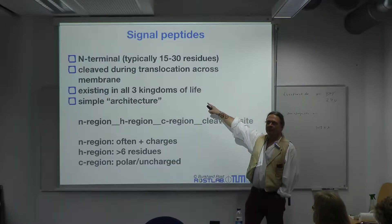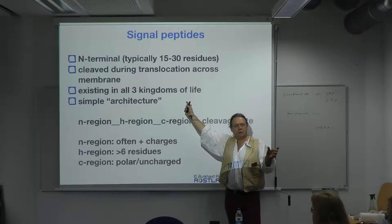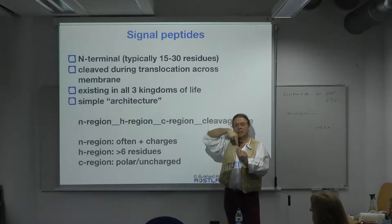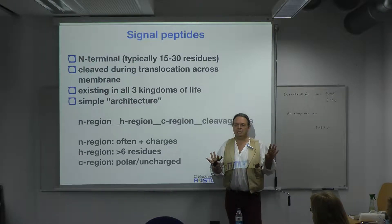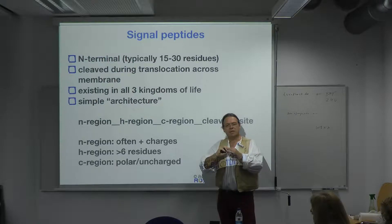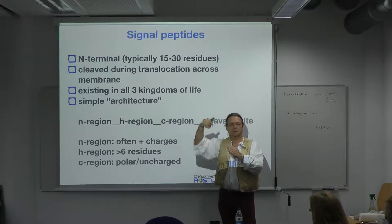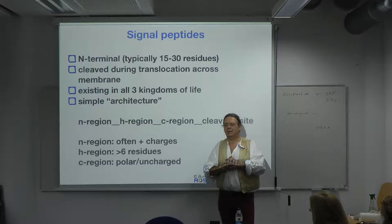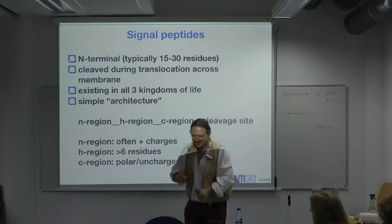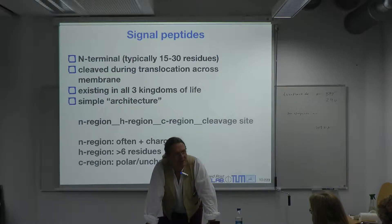The second statement — 'cleaved' — means: A, you have 15 to 30 residues at the beginning of the protein that are cleaved off by some other protein and never used again; or B, cleaved during translocation means that while the protein is being translocated through the membrane, the signal is folded back so the protein gets out. A or B?